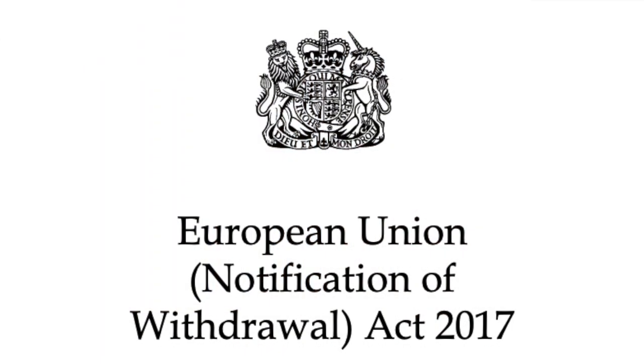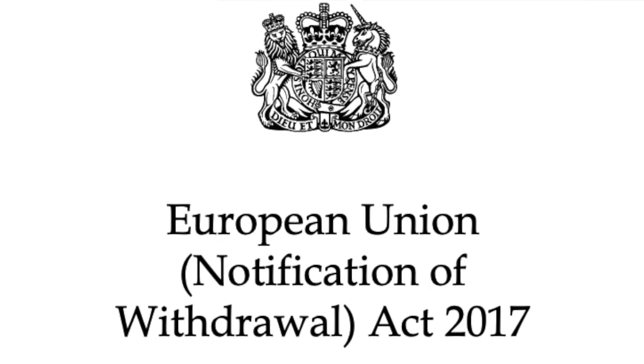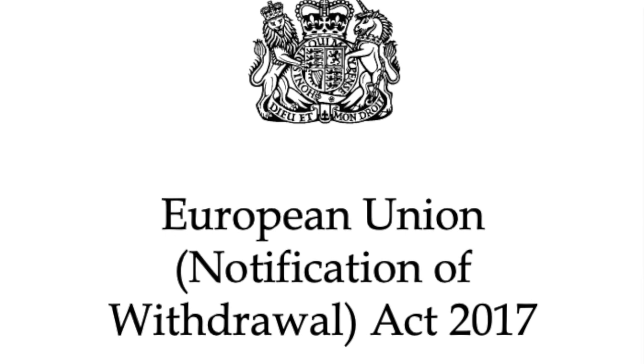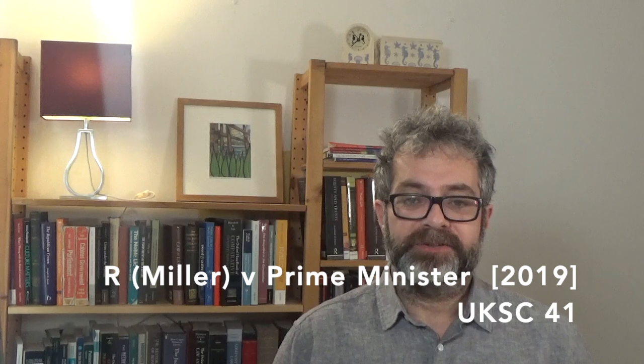Parliament subsequently passed the European Union Notification of Withdrawal Act 2017, explicitly conferring authority on the Prime Minister to give notice under Article 50. The then Prime Minister Theresa May subsequently gave notice, which she could now lawfully do. As I argued at the time in a blog post on the UK Constitutional Law Association blog, this whole litigation could have been avoided if the government had sought authority from Parliament ahead of time.